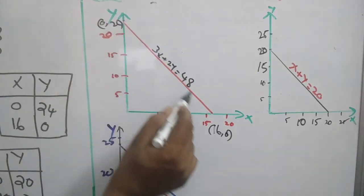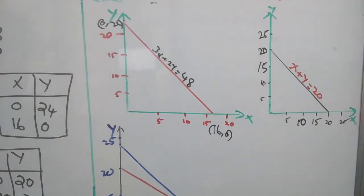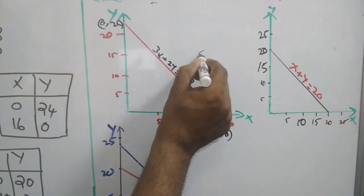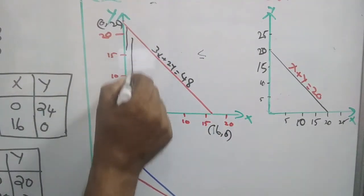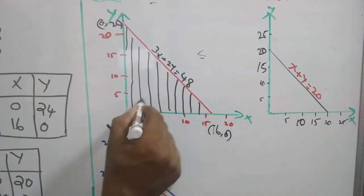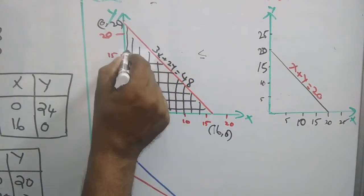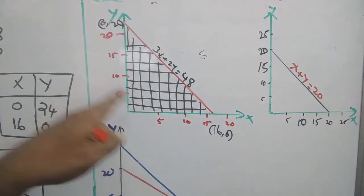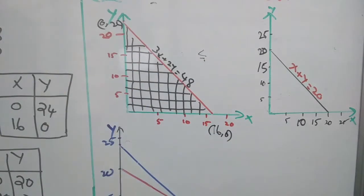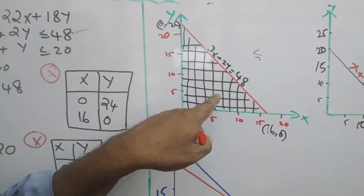Since the constraint is less than or equal to 48, the feasible region is all the area below the straight line 3x plus 2y equals 48. When x equals 0 and y equals 0, the value 0 is less than 48, confirming this. All points in the region below this line satisfy the constraint 3x plus 2y less than or equal to 48.